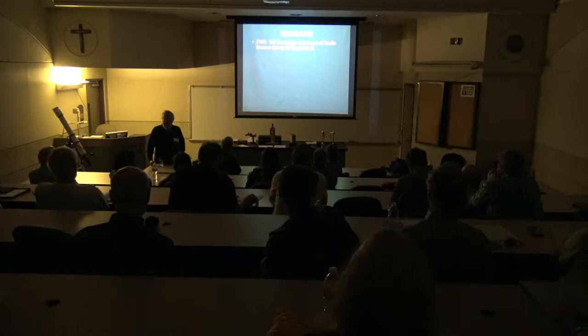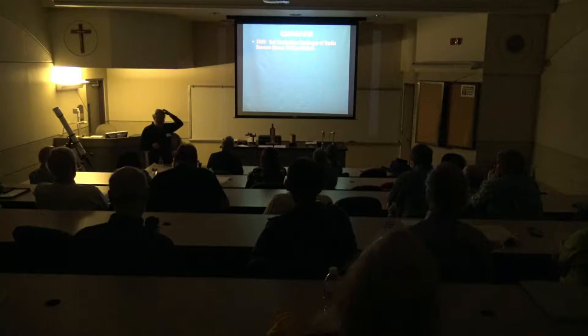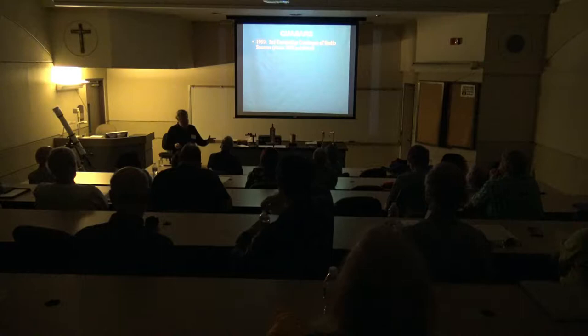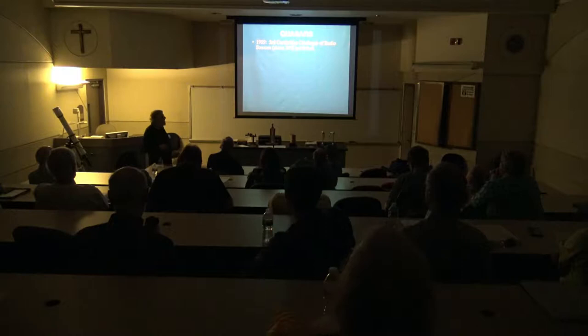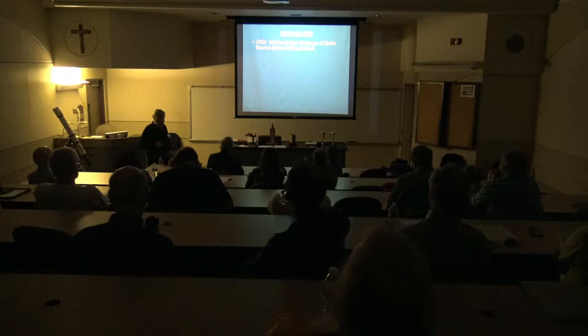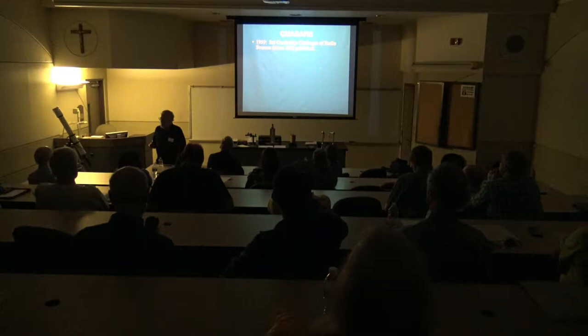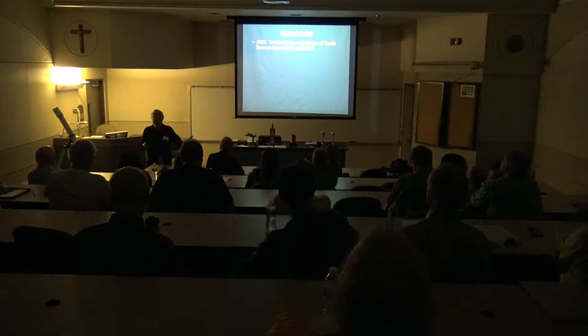The story begins with quasars. There are four sections: quasars, which is half of it, then black holes and galactic nuclei, and a correlation showing how all these things are related. The story begins around 1959 when the third Cambridge catalog of radio sources was published, containing about 200 objects detectable by radio telescopes.